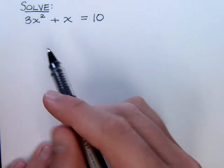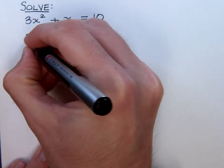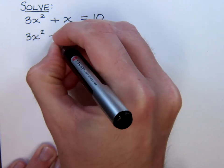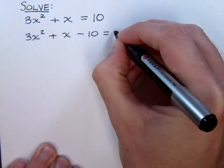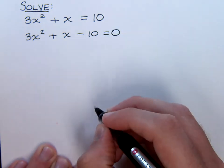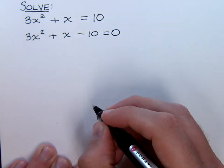So the first thing to do is move the 10 over. So we have 3x squared plus x minus 10 is equal to zero. Okay, no big deal. That step was easy.